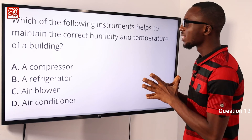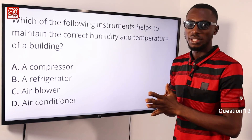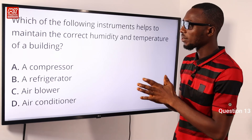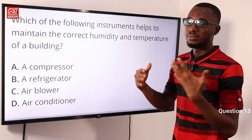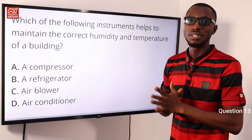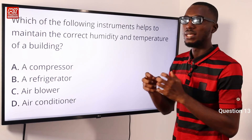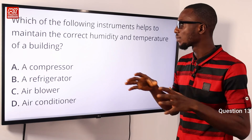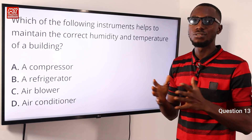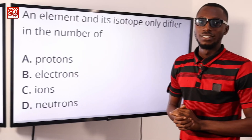Question 13: which instrument helps to maintain the correct humidity and temperature of a building? This is definitely an air conditioner. It makes us feel cold by removing moisture from the air in the surrounding environment and causes a drop in temperature depending on what command you send to the appliance. The correct option is option D — air conditioner.